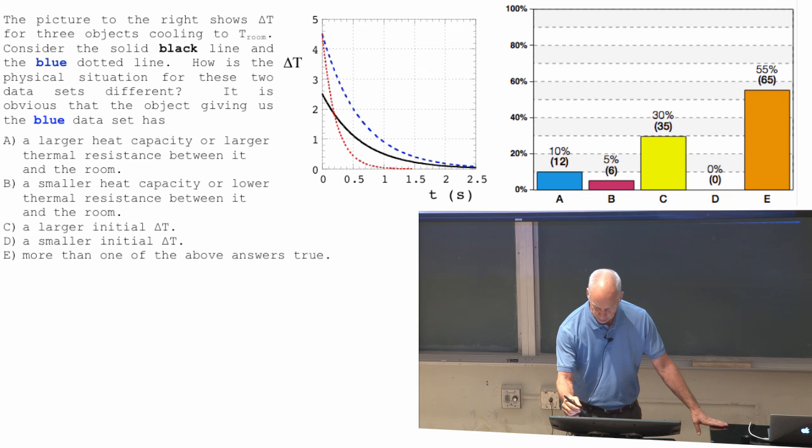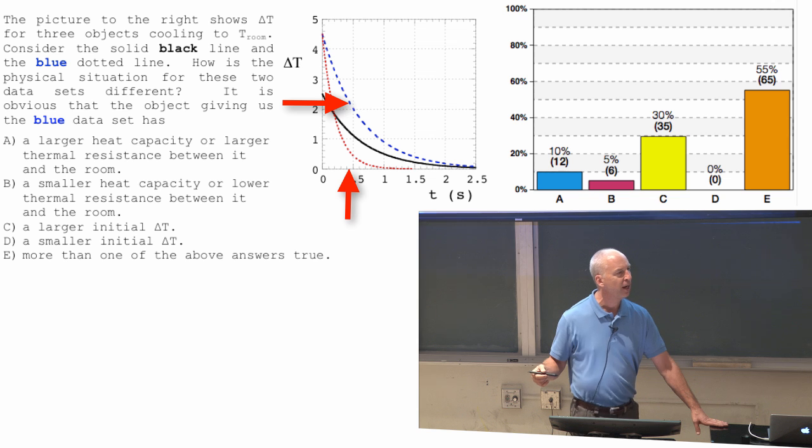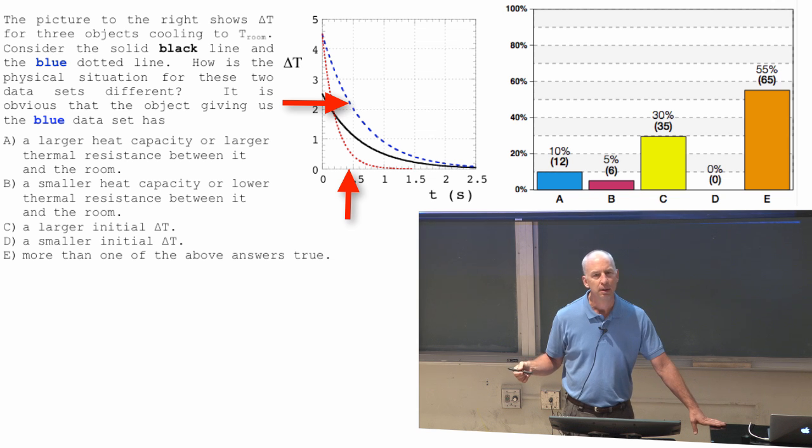What is the half life of blue? Well here's 4.5. The half life, it's eventually going down to zero. So the half life is when it gets halfway. That would be about 2.25, somewhere around here. And you find out that that's in between 0.4 and 0.5, close to 0.4 seconds.